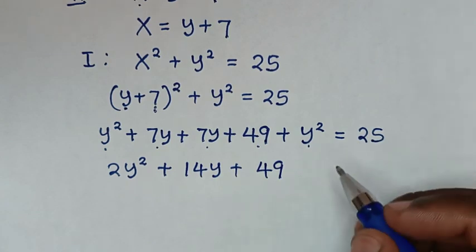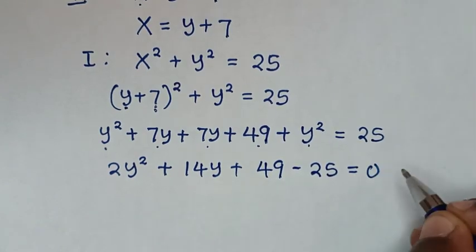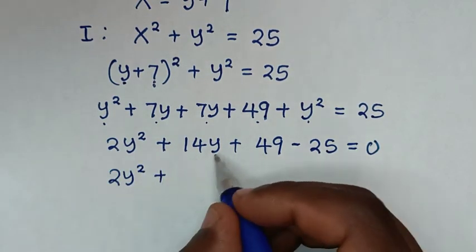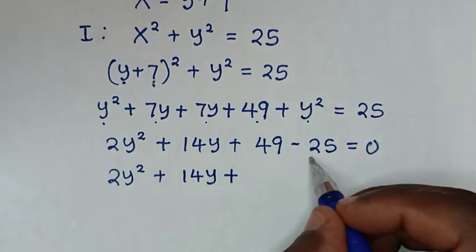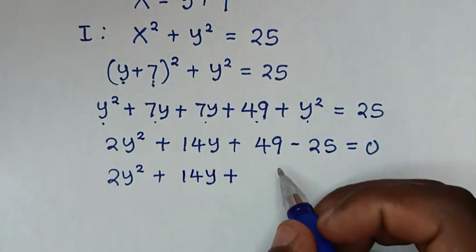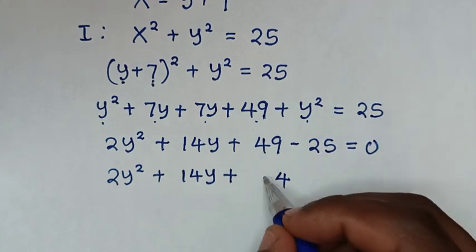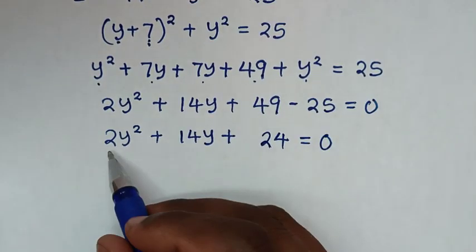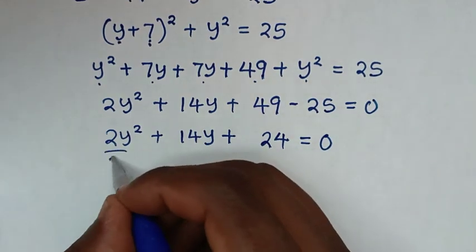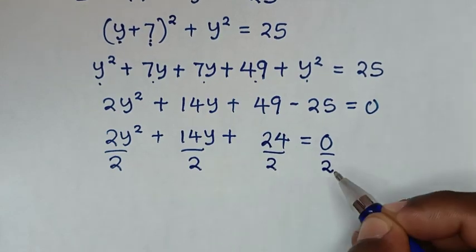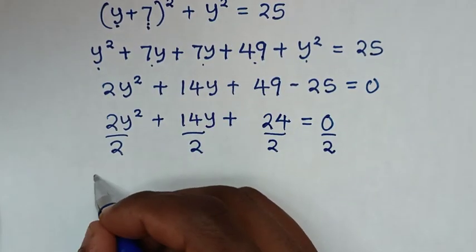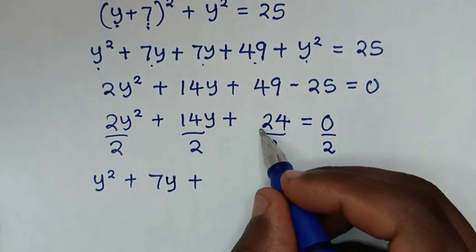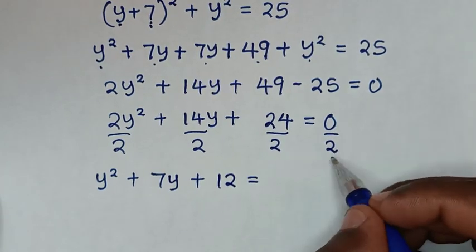We move 25 to the left side, giving minus 25, so it equals 0. This gives 2y squared plus 14y plus 24 equals 0. Since the quadratic equation is divisible by 2, we divide both sides by 2: y squared plus 7y plus 12 equals 0.